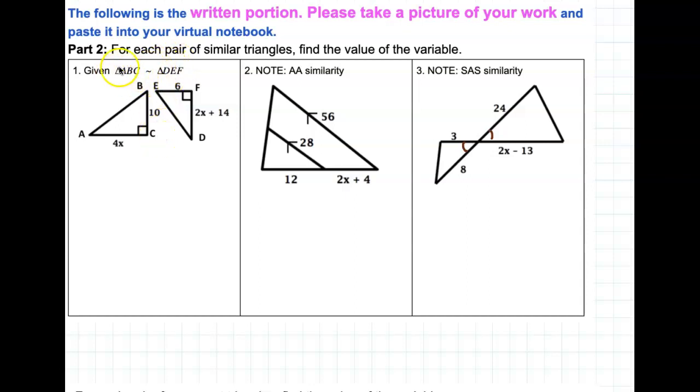All right, so when it says that two triangles are similar or if it says they're congruent, the order in which it says is how they correspond.